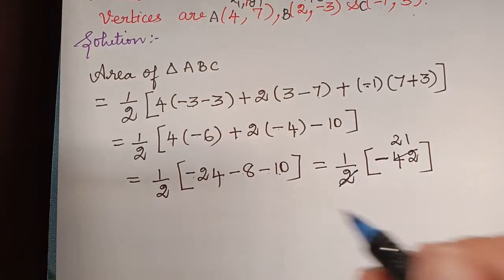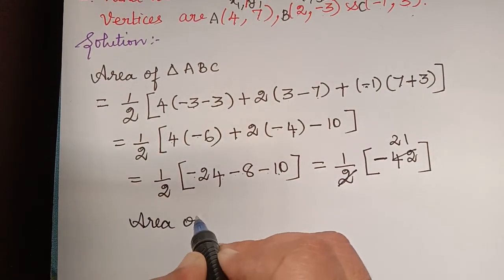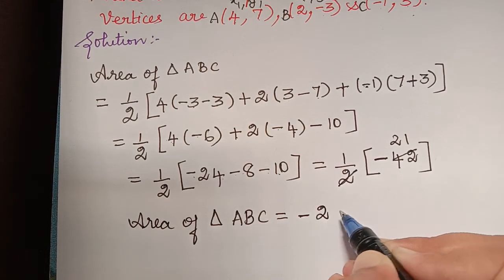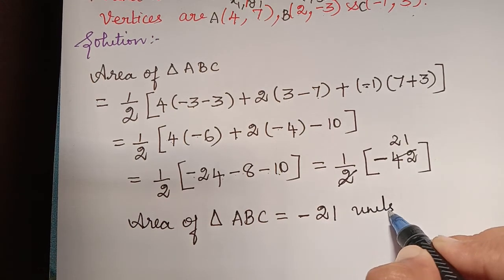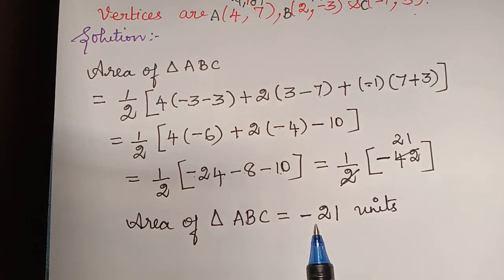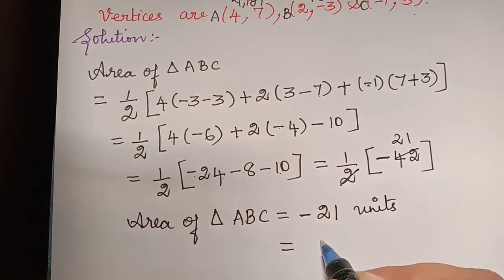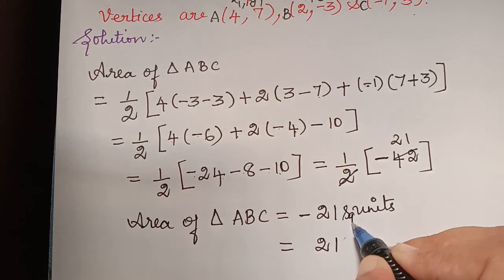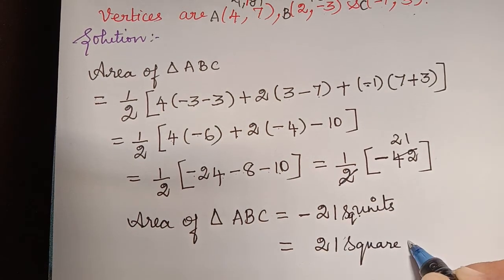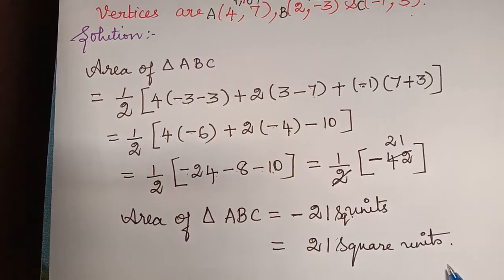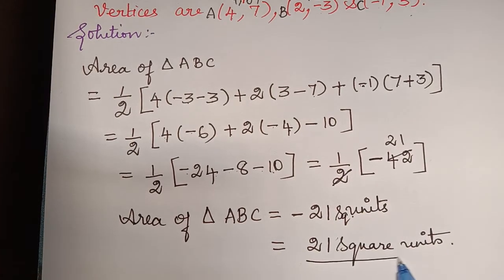The area of triangle ABC equals negative 21 units. However, area need not be expressed as a negative quantity. Therefore we write the area as 21 square units. The solution of the problem is 21 square units. I hope you have understood how to find the area of a triangle.